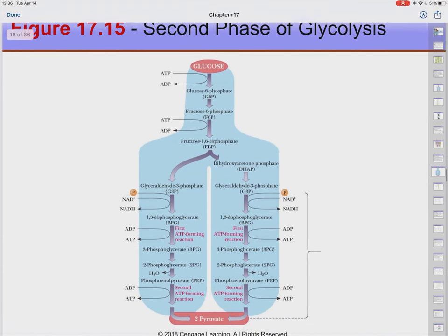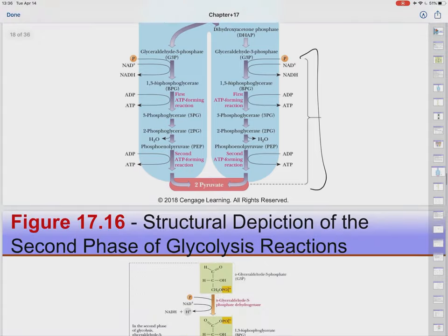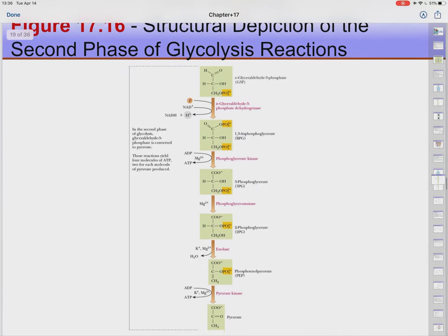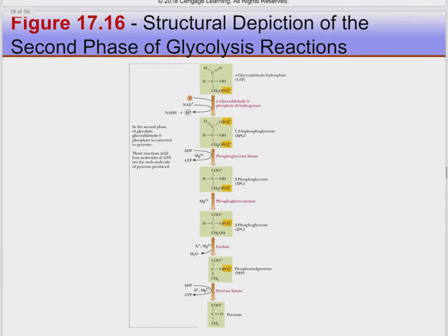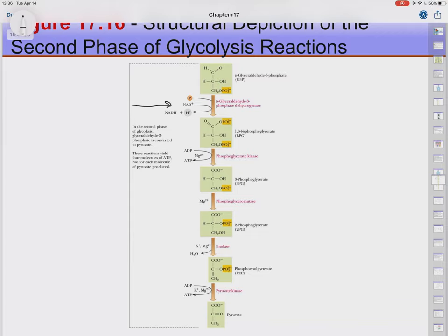Now we look at phase two — the payoff phase. Here are the molecule structures, the enzyme names, and the molecule names. There's going to be one oxidation-reduction reaction, an electron transfer, and it's the only one. Of course this is happening twice since there are two branches. There are also some ATPs that get made.